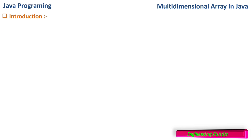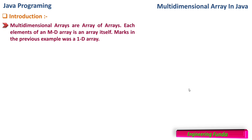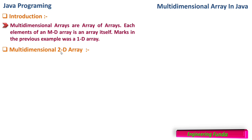Multi-dimensional arrays are arrays of arrays. We can visualize this as a grid in which the first row is one array, and if we connect many such arrays one after another, that is a multi-dimensional array. Each element of a multi-dimensional array is an array itself. Multi-dimensional array starts from 2D array, that is two-dimensional array.